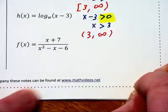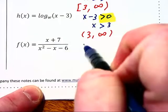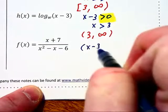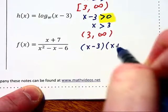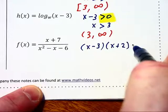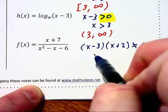In this final example, let's look at this denominator. It factors into x minus 3 times x plus 2. And we know that that is not allowed to equal zero. Therefore, x cannot be equal to 3 or negative 2.